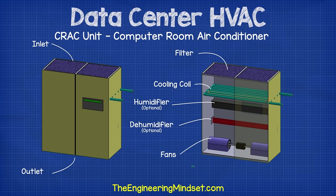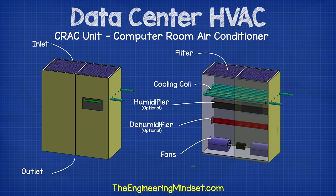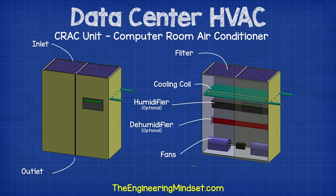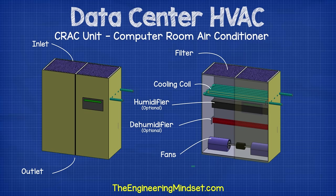The CRAC units have heat exchangers inside which are connected to refrigeration units or chilled water systems to remove the heat from the server racks. Some can also humidify or dehumidify the air — that's very important in order to control the static electricity in the air. They have filters inside to remove dust from the room as well as a fan to circulate and distribute the air.